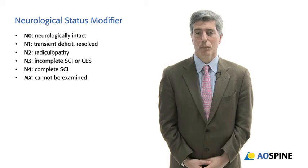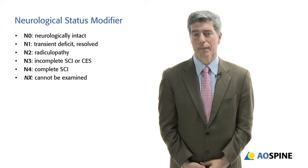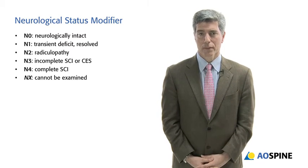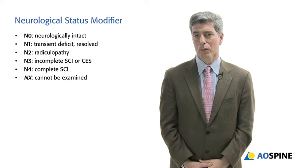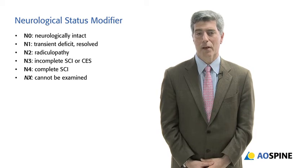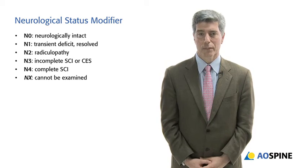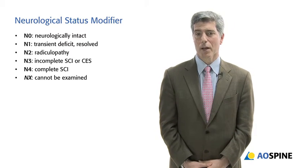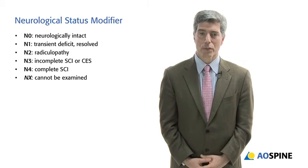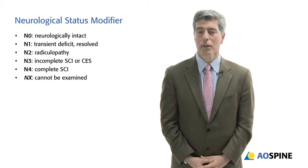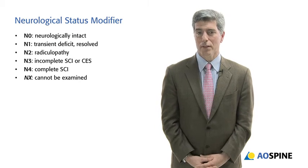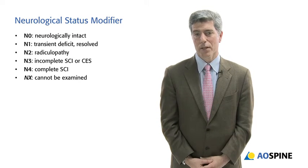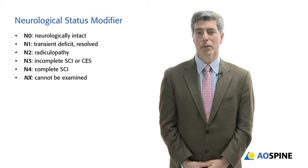N2 — the patient comes in complaining of leg pain; they have a pinched nerve with no involvement of the spinal cord or cauda equina — that would be an N2. An N3 is an incomplete spinal cord injury patient, which is much more severe, or cauda equina syndrome. And an N4 means the patient has a complete spinal cord injury.